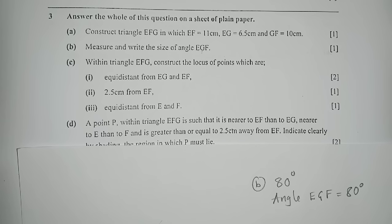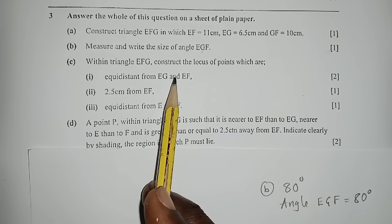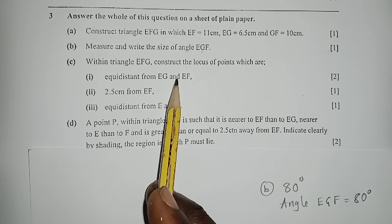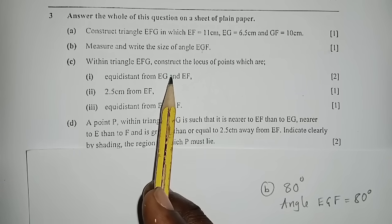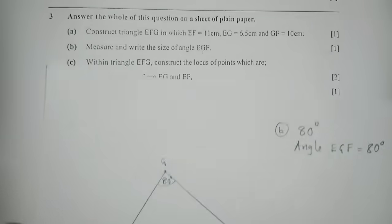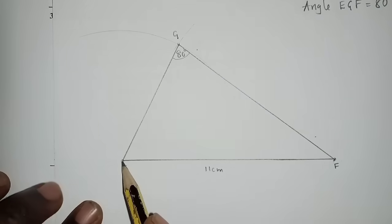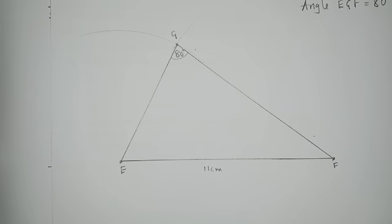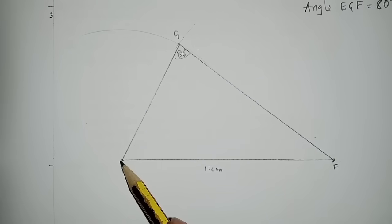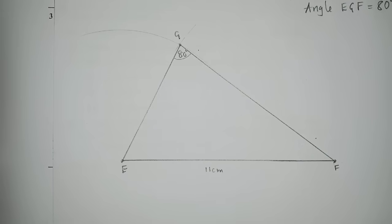The next question says: within triangle EFG, construct the locus of points which are equidistant from EG and EF. When you come across a question like this, check the letter which is common — the common letter here is E. So the line is passing at E and it should be the same distance between EG and EF. Point E is right here, so we need to construct a line passing at E, straight inside the triangle.